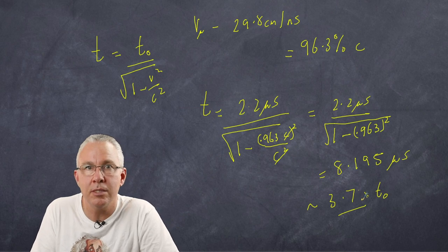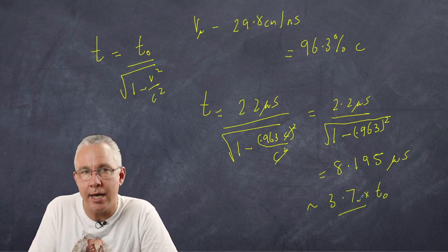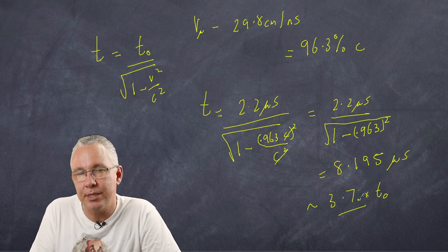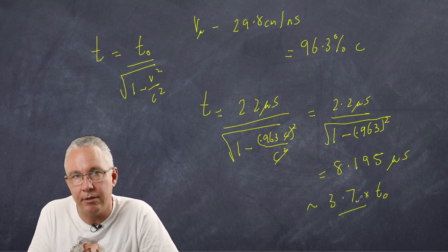In other words the muons seem to survive a longer time because they're traveling at 96.3 percent of the speed of light. Now this experiment was seen as a validation of Einstein's prediction of time dilation.